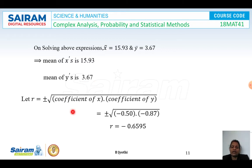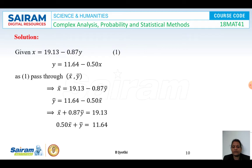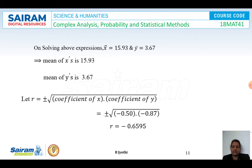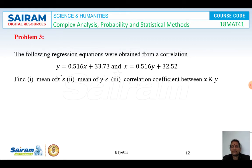To find the correlation coefficient r, we use r equals plus or minus root of (coefficient of x times coefficient of y) = plus or minus root of (minus 0.50 times minus 0.87). The coefficient of y in the first equation is 0.87 and the coefficient of x in the second is 0.50. Since both coefficients are negative, r is negative, giving r equals minus 0.6595.